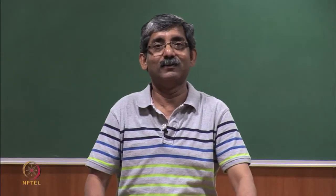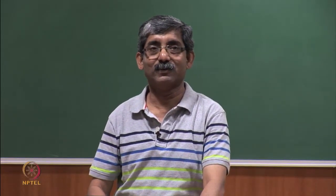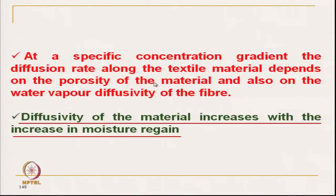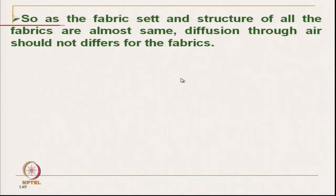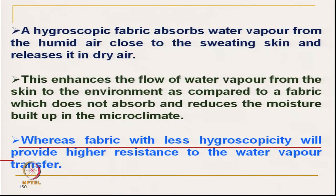Hello everyone. We will continue with the Moisture Vapour Transmission. We are discussing the Moisture Vapour Transmission through fabrics made of fibres at different proportions of hydrophilic fibre. As we have discussed, with the increase in hydrophilic content, the Moisture Vapour Transmission increases. This increase is mainly due to absorption-desorption, and the diffusivity — the diffusion coefficient of the material — is actually reduced, as we have discussed.